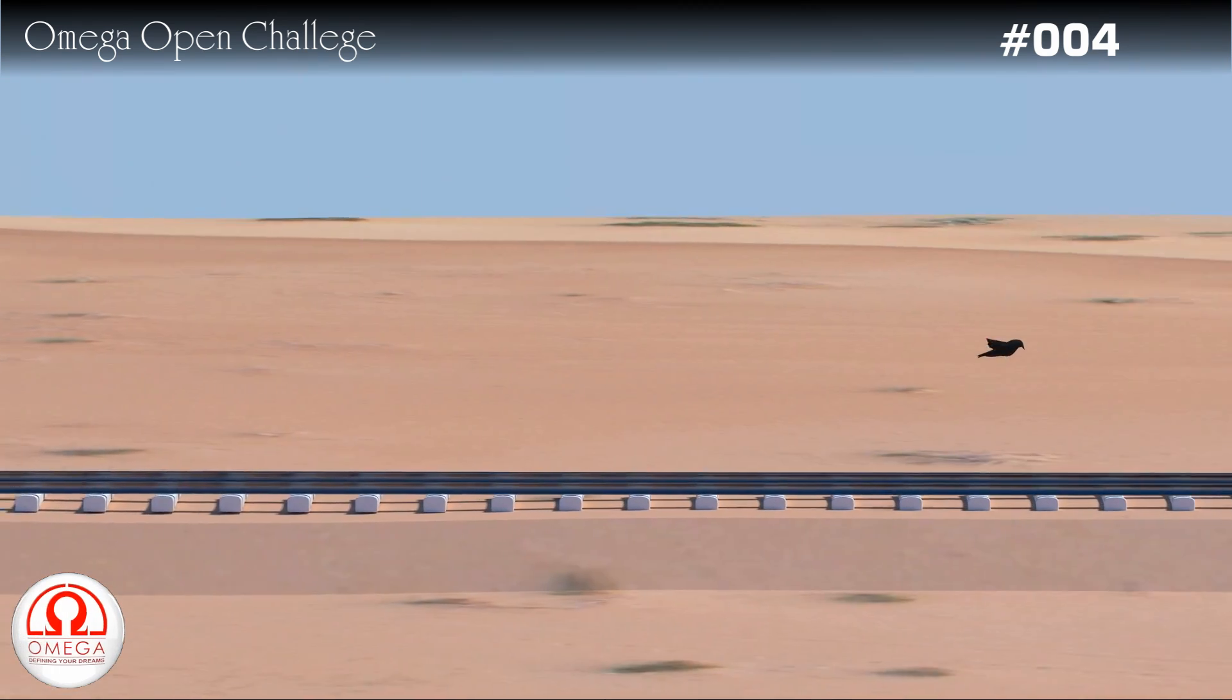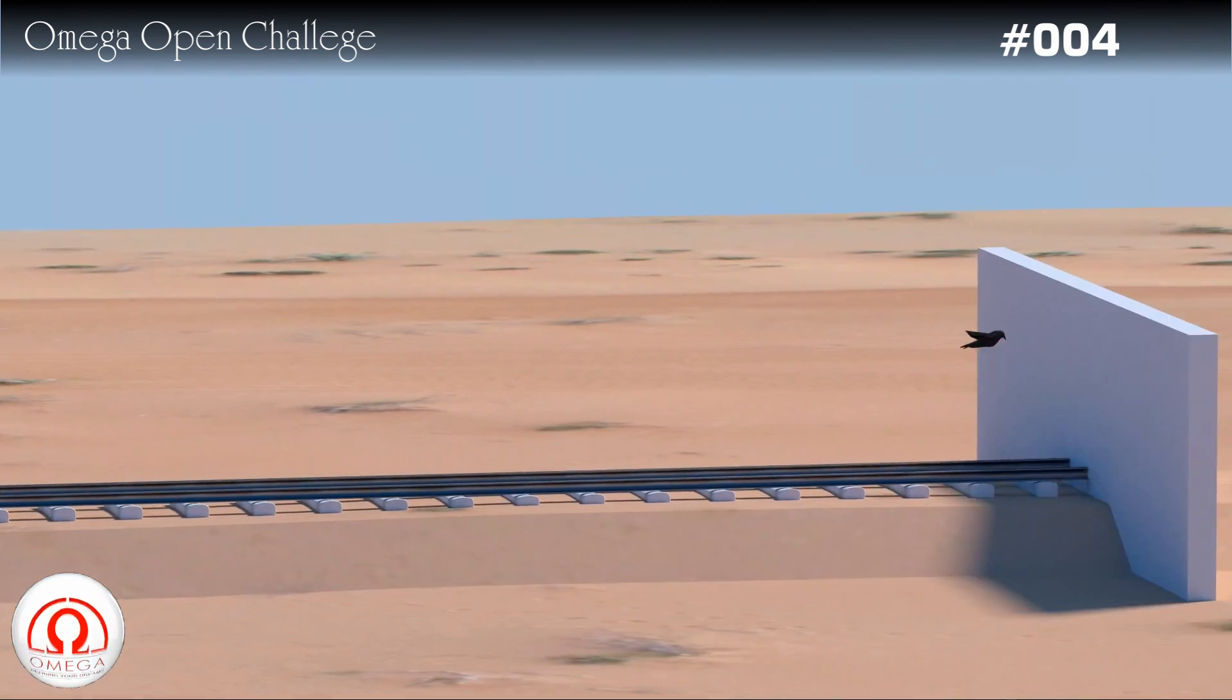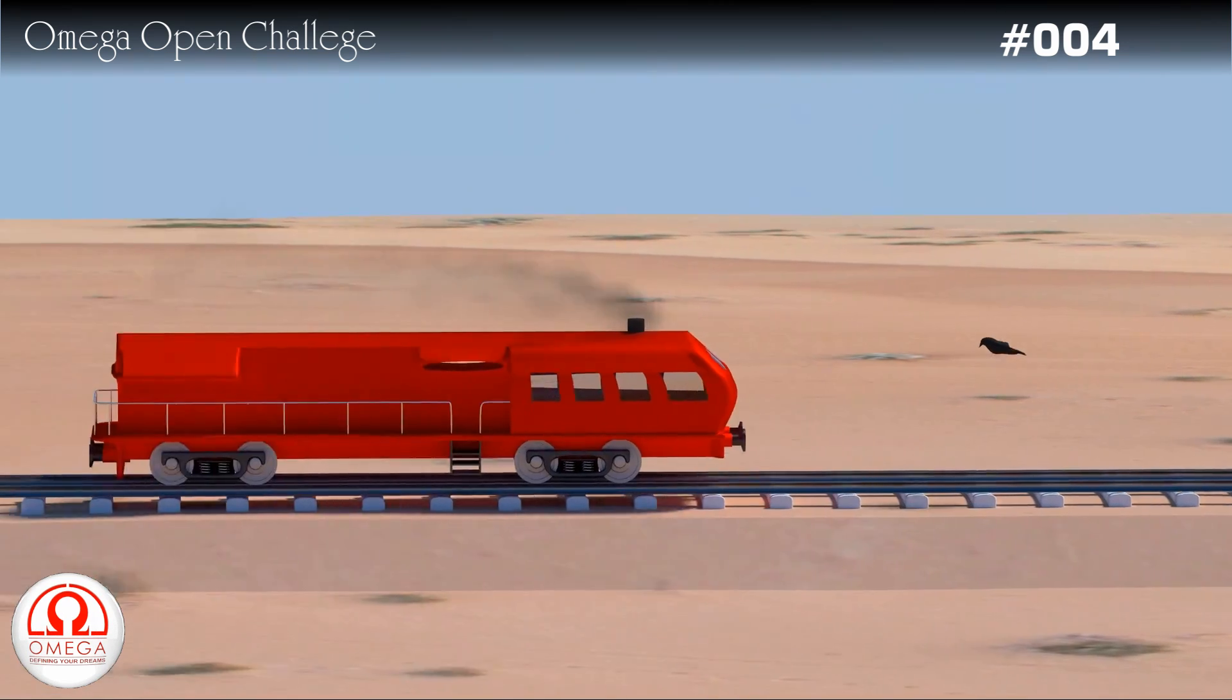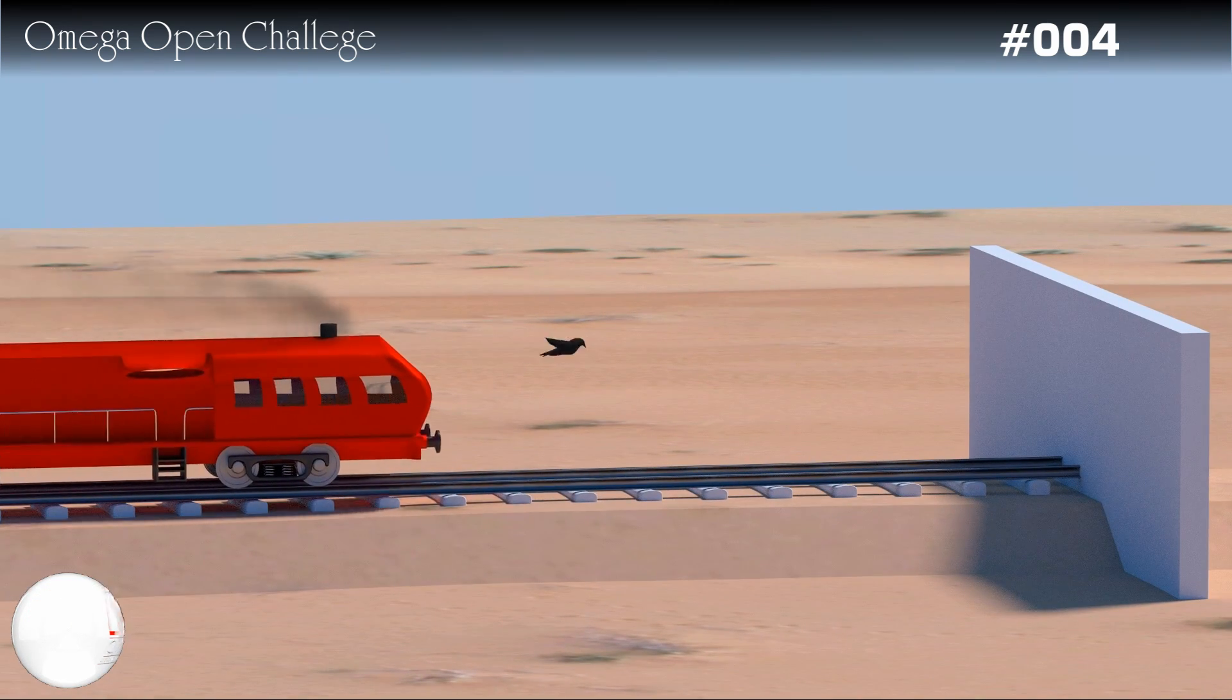Welcome to Omega Open Challenge. The challenge number 4 was to draw the displacement-time graph of the bird and from the graph find the distance travelled by the bird in train bird problem.